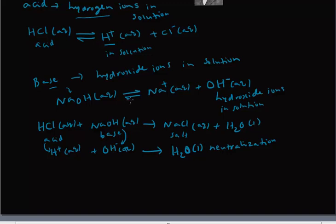So we can explain Arrhenius theory using this example. Hydrochloric acid is an Arrhenius acid because it can produce H⁺ ions in solution, and sodium hydroxide is an Arrhenius base because it can produce hydroxide ions in solution.